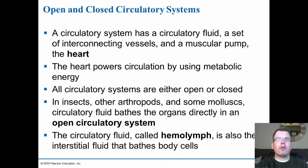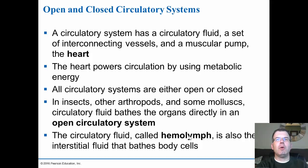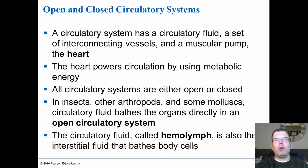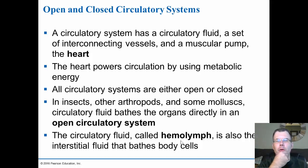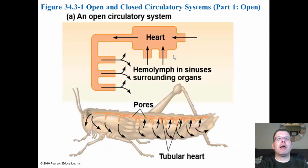In insects and other arthropods and some mollusks, the circulatory system bathes the organs directly in an open circulatory system. This is called hemolymph — sometimes called the hemocoel — which is a mixture of blood and lymph together. Typically in an open circulatory system you're going to see hemolymph, which is kind of the mixture of the two. It's not really blood because most of it is oxygen being carried by some type of heme group, not really hemoglobin. The lymph is the cellular fluid which they're bathed in.